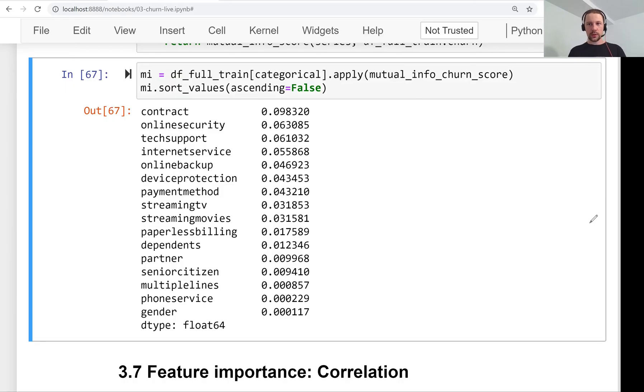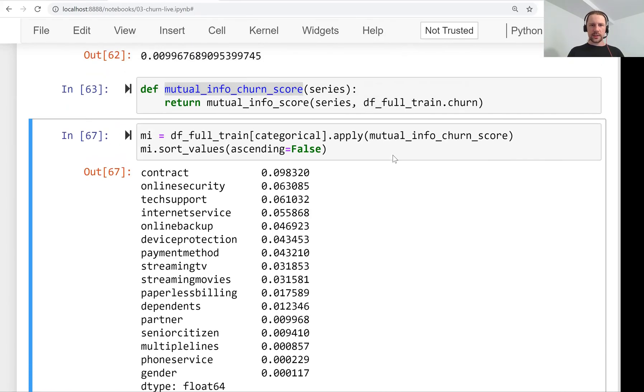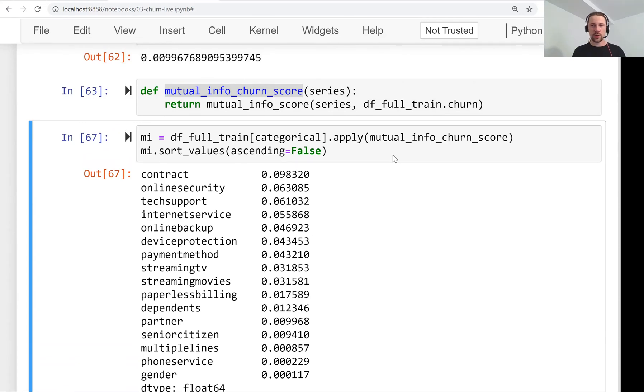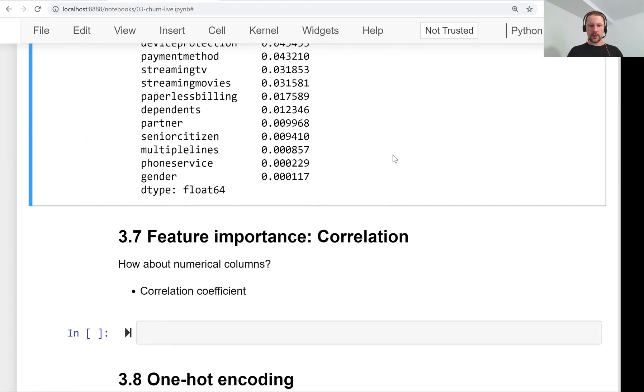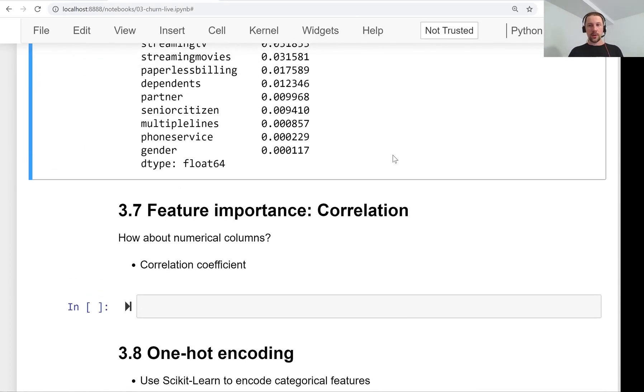In this lesson, we looked at mutual information as a way to measure the relative importance of categorical variables. We talked about categorical ones, and in the next one, we will talk about measuring the importance of numerical variables.